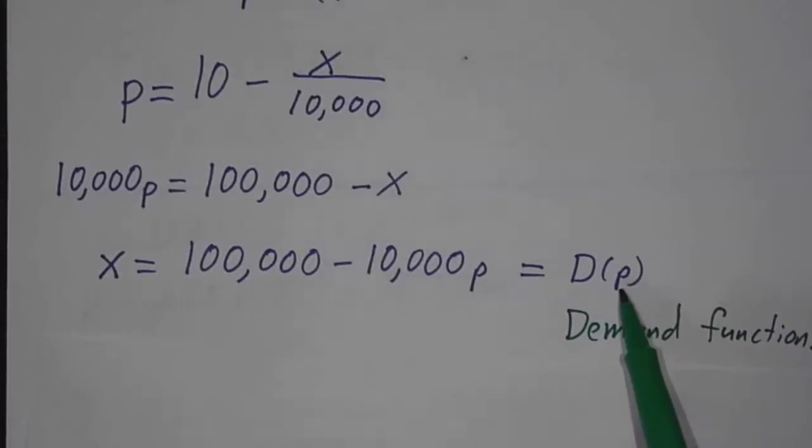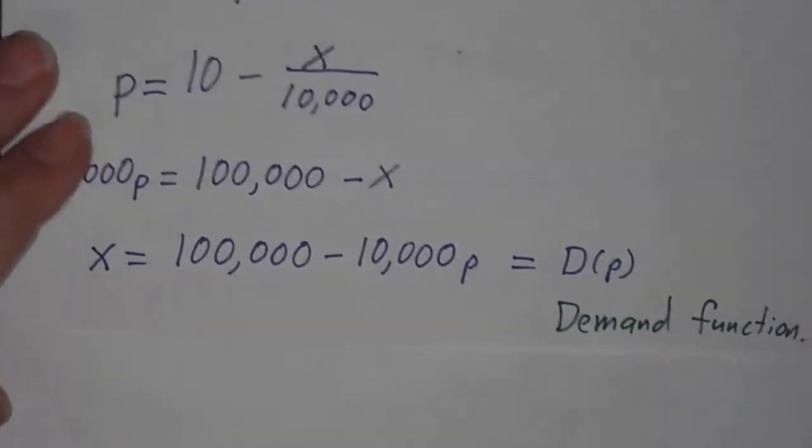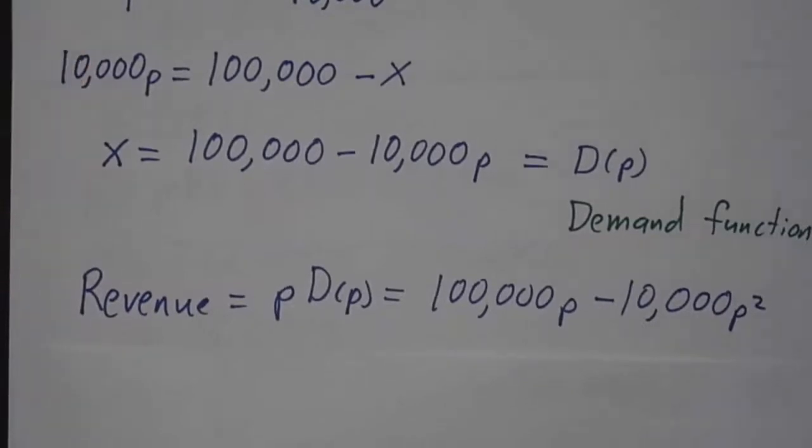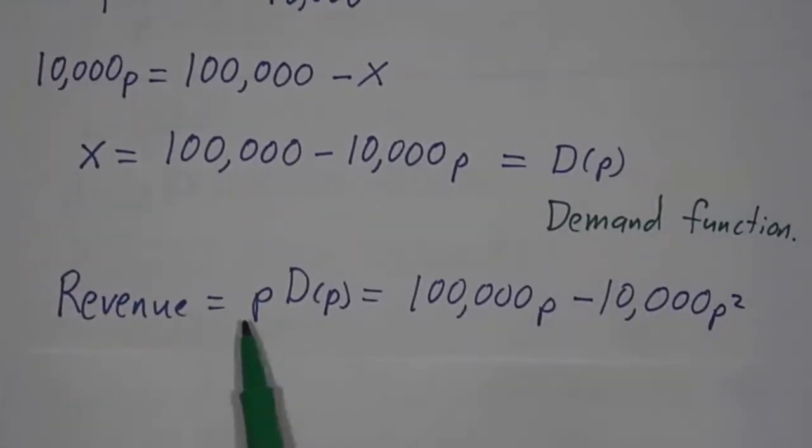The lower the price, the more people will buy your product. And then the revenue is still going to be the price times the number of items. So you take the demand function and multiply by p, and that gives you your revenue.